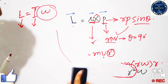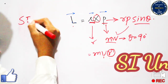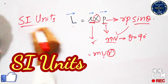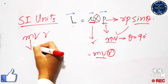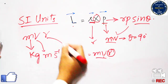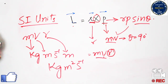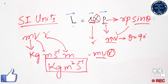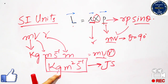Now we need to understand the SI units and dimensions of angular momentum. From the formula mvr: mass has units of kilograms, velocity has units of meters per second, and r has units of meters. Combining these gives kilograms times meter squared per second. This can also be expressed as joule-seconds.